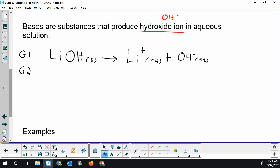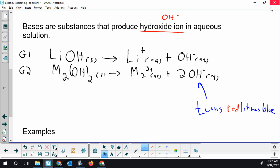You might have a group two metal like magnesium, and the group two metals need two hydroxides in its formula unit. You put that into water, the ratio is a little different but you still get hydroxide, and it's hydroxide that turns red litmus blue.